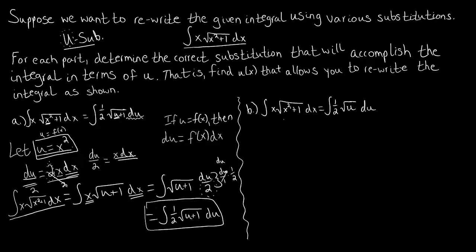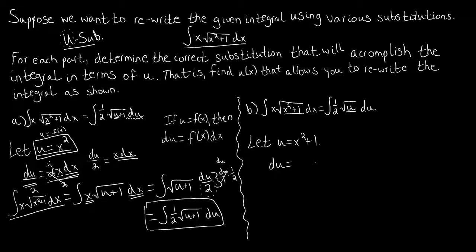Let's look at part B. We see that the transformation going from x to u is that x squared plus 1 has taken the form of u. Using the same thinking, we let u equal x squared plus 1, and find the differential of u. Since u is a function of x, du equals f prime of x dx, which gives us du equals 2x dx again.